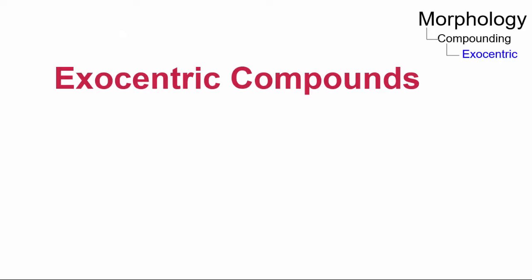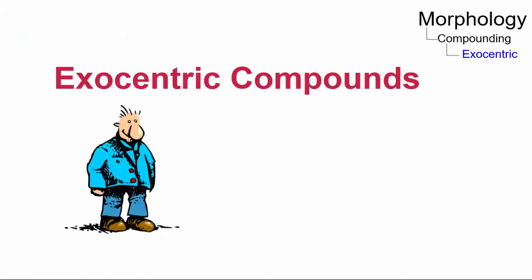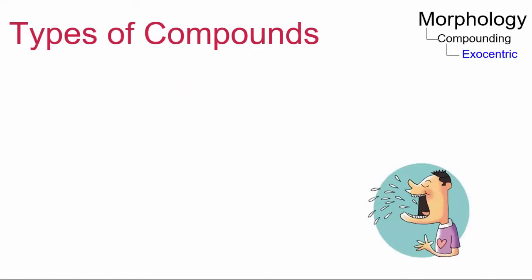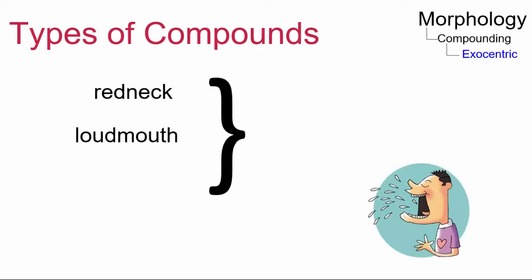In the English language, exocentric compounds refer most often to human beings, or in the rare case to animals. Such exocentric compounds, as for example redneck, loudmouth, or redskin, denote a person with a quality expressed by the compound. A loudmouth is someone who has a loud mouth, and a redskin is someone whose skin is a reddish color. These compounds consist of an adjectival modifier and a noun head.